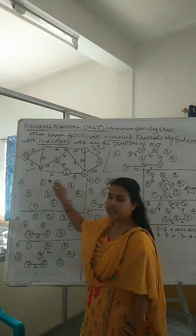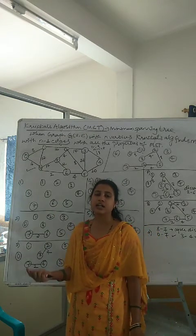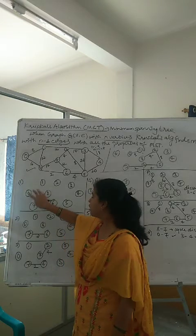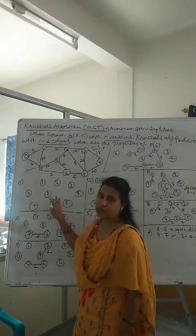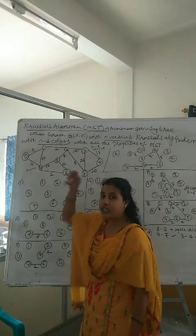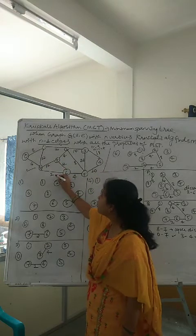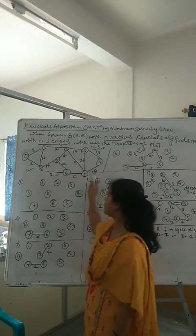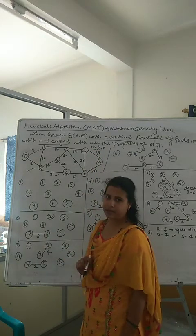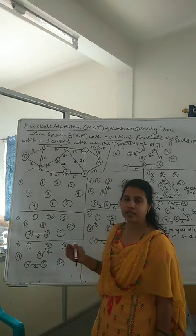Initially, with no edges considered, there are 9 individual trees, one for each vertex from 0 to 8, since a single node also forms a tree. The first step is to delete from the edge set the edge with minimum cost. Out of all the edges with their costs, the minimum cost is 2. So we delete that edge from the edge set and include it in the minimum spanning tree. Step by step, following this process, we will find the MST with n minus 1 edges.